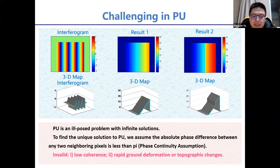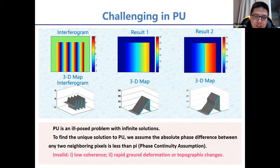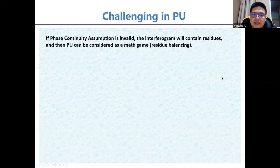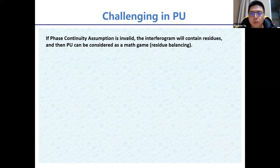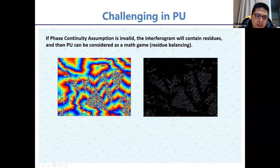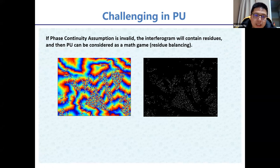Sometimes the phase continuity assumption is invalid — for example, when the interferogram has low coherence, or contains rapid ground deformation or strong topographic change. When this happens, the interferogram contains residues. The residues tend to cluster in noisy areas, where their density is high. Phase unwrapping can be considered as a problem of balancing these residues.